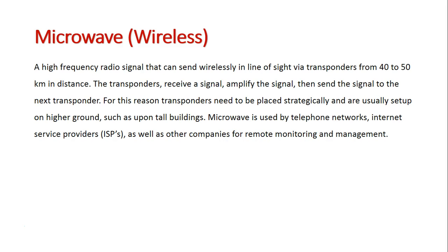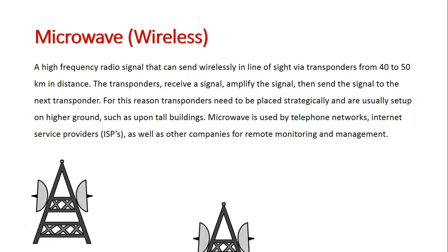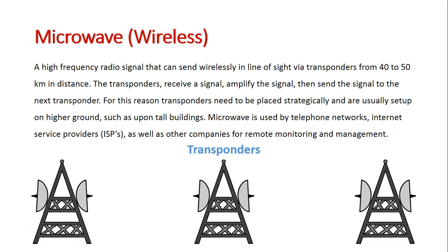The first one we're going to look at is microwave. Basically a high frequency signal is sent from big towers, known as transponders, and they're placed about 40 to 50 kilometers apart. The signal is sent directly through line of sight from one tower to another, spreading over a wide geographical region.